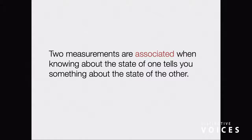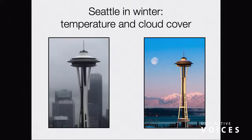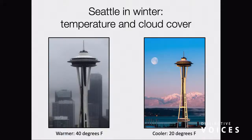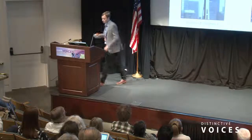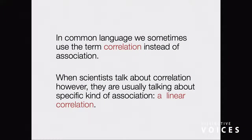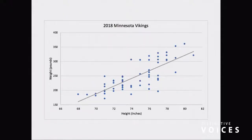We really want students to think clearly about correlation causation because they see it every day. The problem is there's this misconception about what correlation by itself really is. Two measurements are associated — we talk about when knowing about the state of one tells you something about the other. For example, I live in Seattle. In the winter, if it's cloudy, it's going to be around 40 degrees — not always, but that's the association. In common language, we sometimes use the term correlation instead of association. But when scientists talk about correlation, they're usually talking about a linear correlation — like the heights and weights of the Minnesota Vikings.